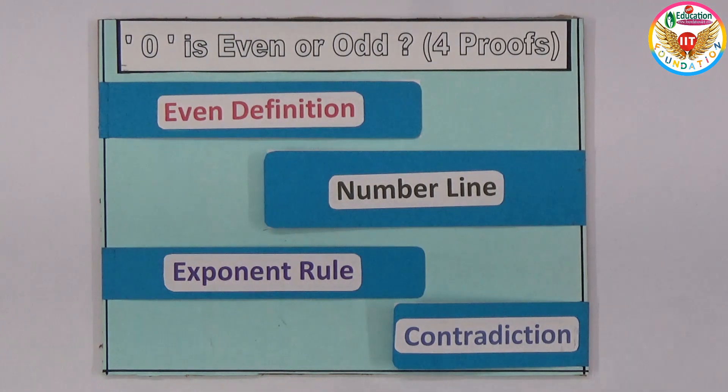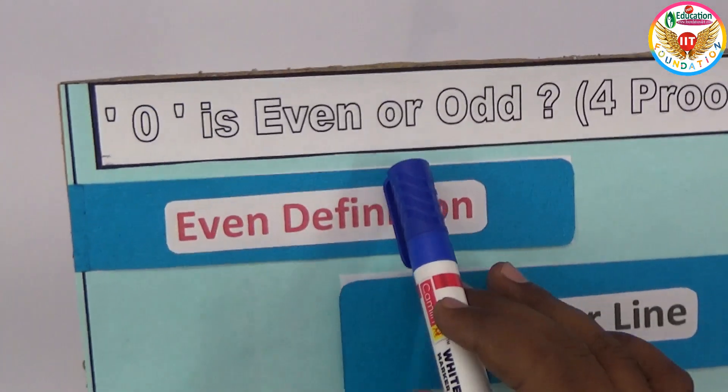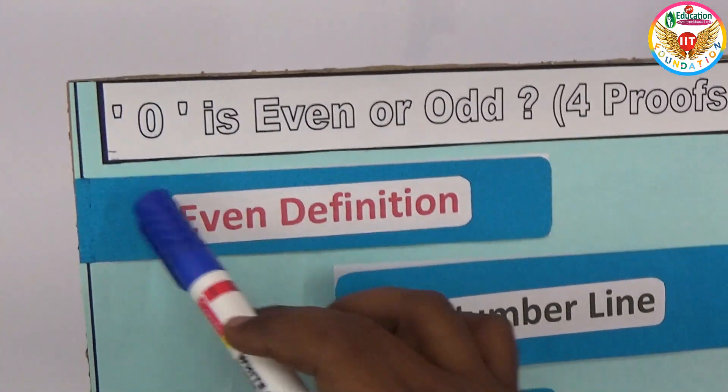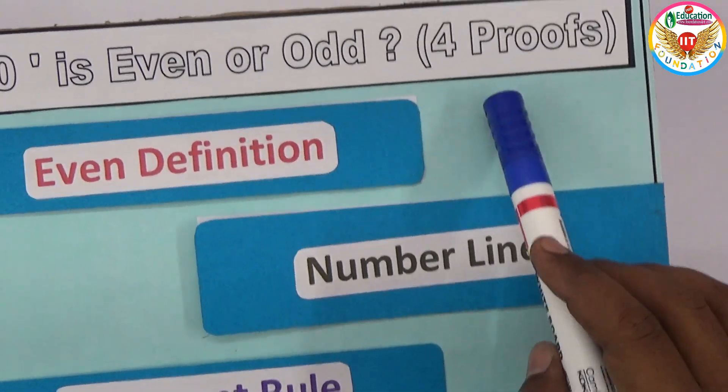Welcome to education channel. In this video, I will show one important proof: whether zero is even or odd. Actually, we know that zero is an even number. To show this in this video, I came with four proofs.